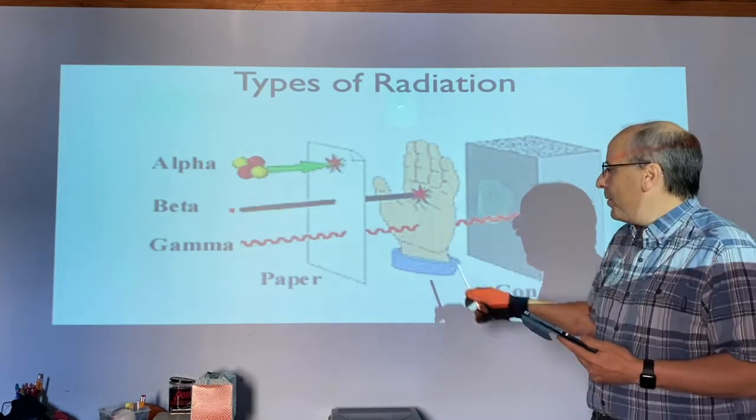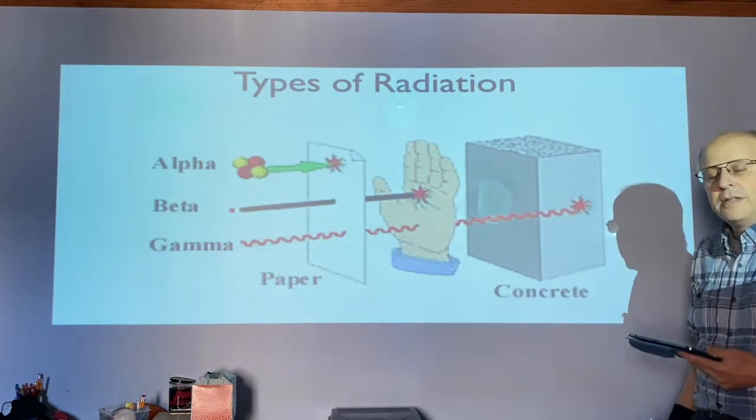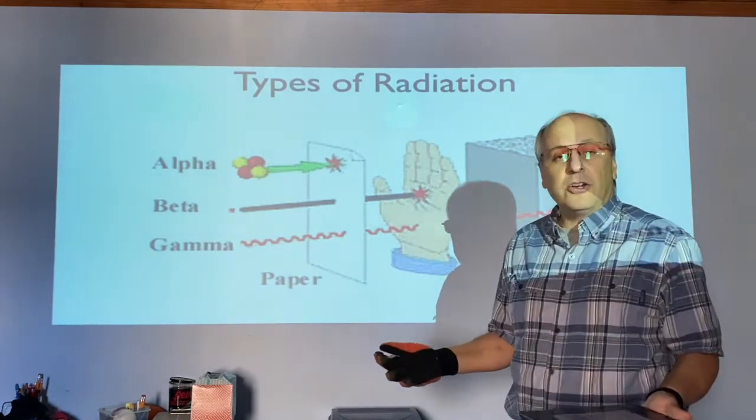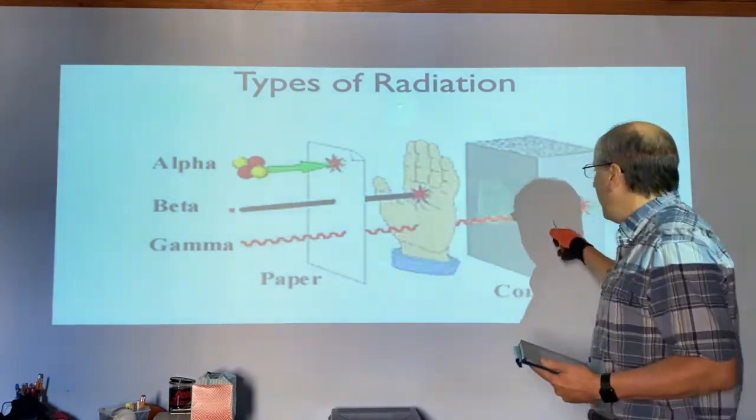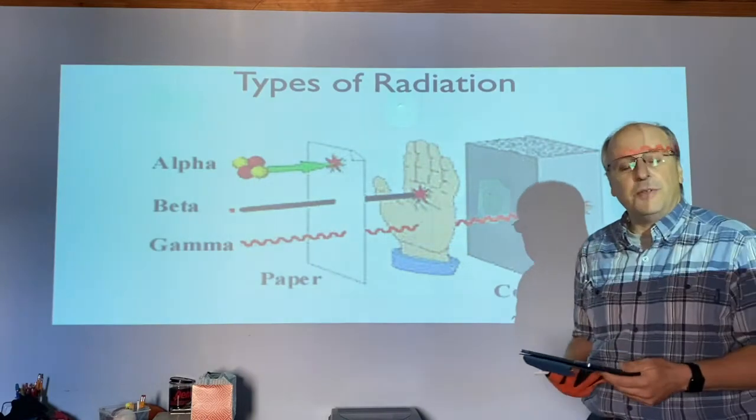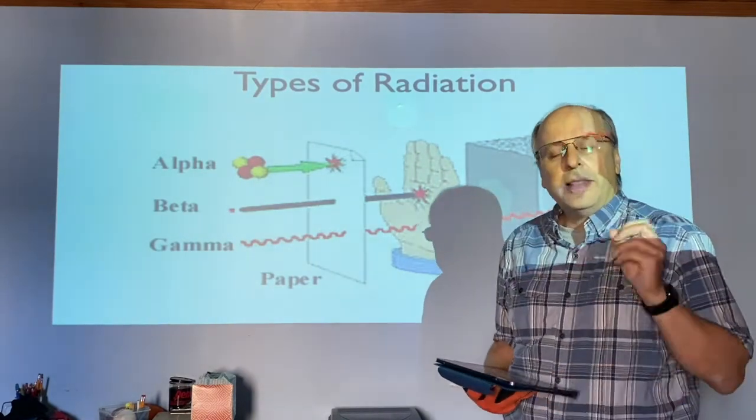A gamma particle could pass through paper, possibly the entire human body, and possibly quite a bit of concrete too, before it is stopped. Now realize, why are these particles able to make it through a solid?